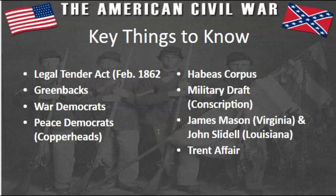Two key Confederate figures in this section: James Mason from Virginia and John Slidell from Louisiana. They were sent to Europe to negotiate with Britain and France. The United States did not want Europeans to recognize the Confederate States of America as an independent country — they wanted to say this was an internal problem. By saying that, they also wanted Europeans to respect their blockade of southern ports, essentially acknowledging that the Union was disciplining the South.